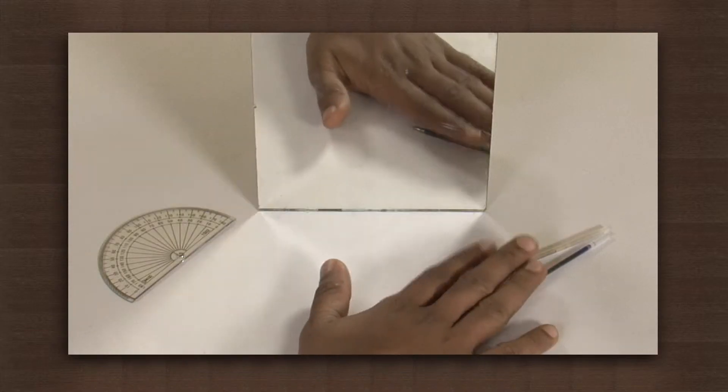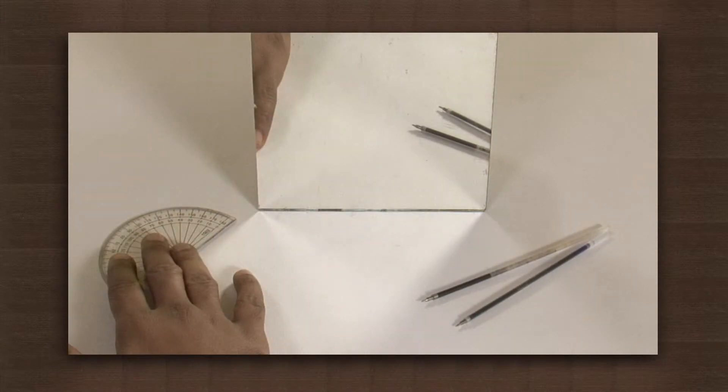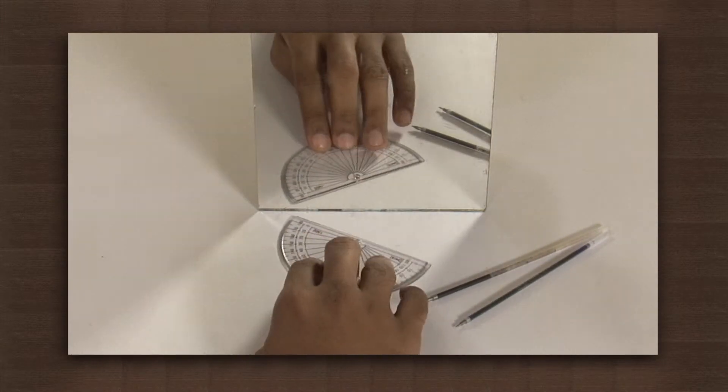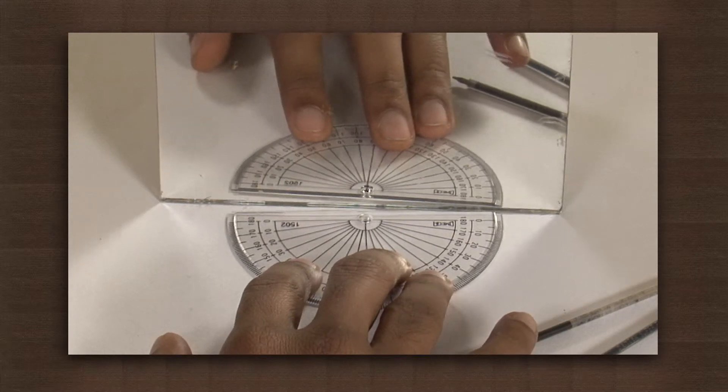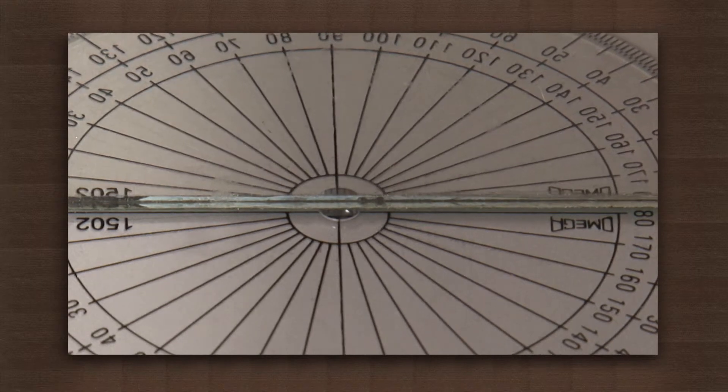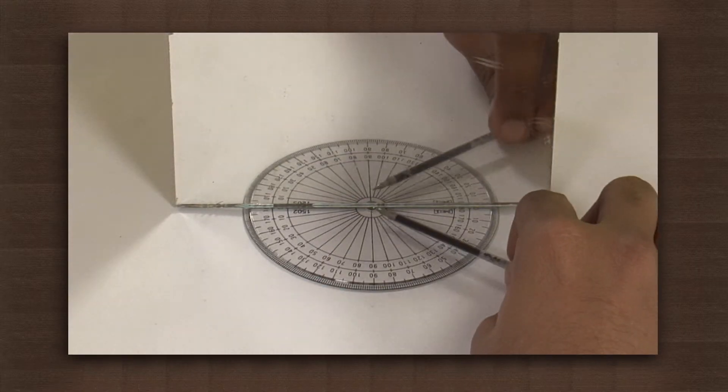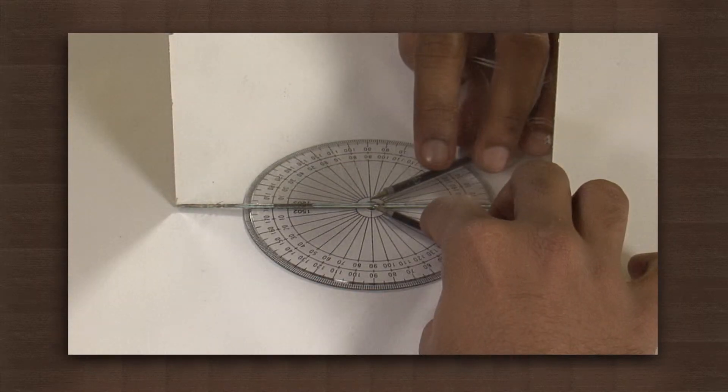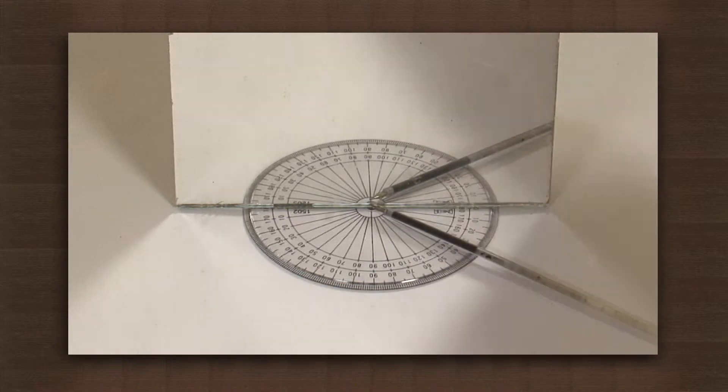We need a plain mirror, pen refills, and a protractor. First we will keep the protractor below the mirror. Now arrange one of the refills in front of the mirror such that the tip is close to the vertex of the protractor.